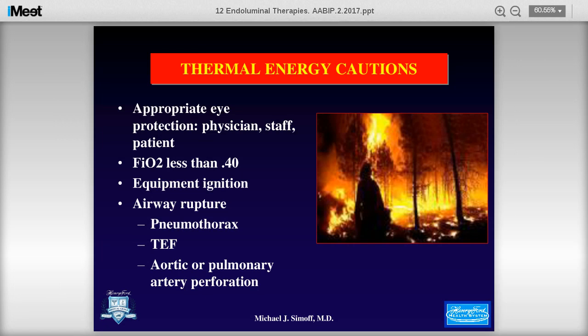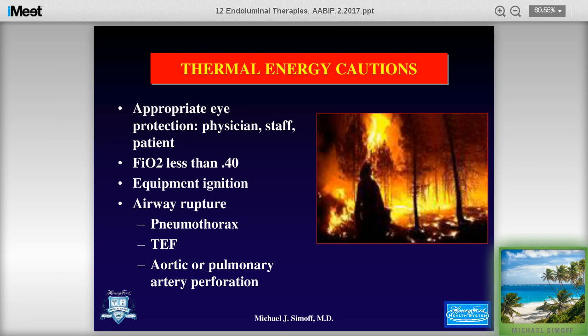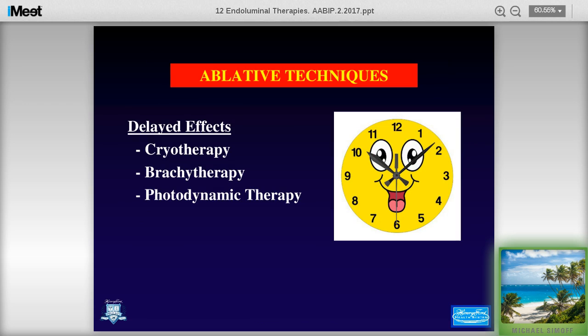Thermal energy cautions: appropriate eye protection — everyone must have laser goggles on and the patient's eyes need to be protected. The FiO2 needs to be less than 40 percent — do not break this rule and document it clearly. Equipment ignition: if a fire starts, everything in the airway will burn, particularly a flexible bronchoscope — remove suction catheters and everything else as quickly as possible. Airway rupture, pneumothorax, tracheoesophageal fistulas, and aortic or pulmonary artery perforations can occur with any thermal energy.